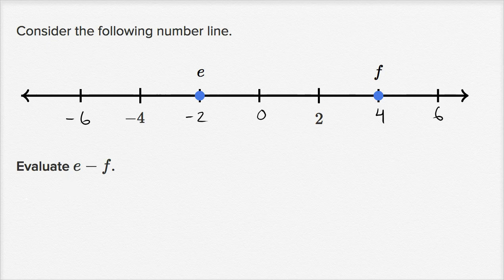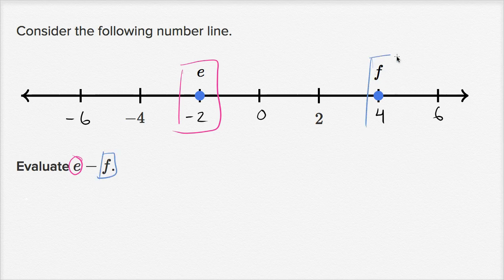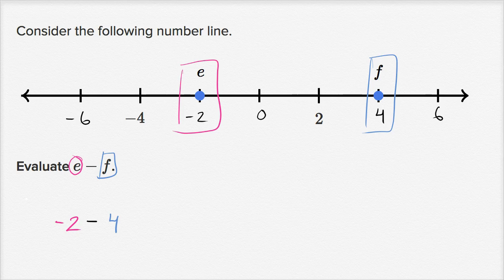Evaluate e minus f. We know that e is equal to negative two and f is equal to four. So this is going to be negative two minus positive four, which equals negative six. If you start at negative two, subtract two to get to negative four, subtract another two to get to negative six. So we are done.